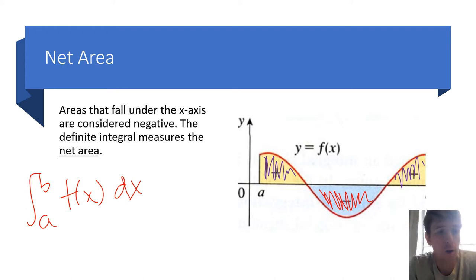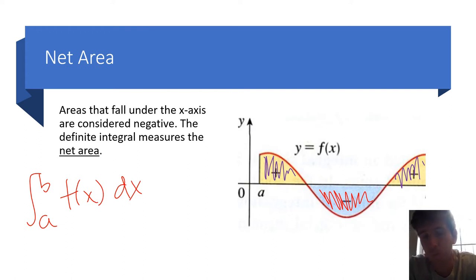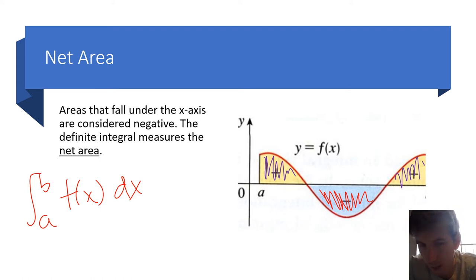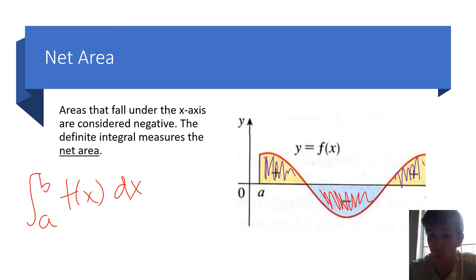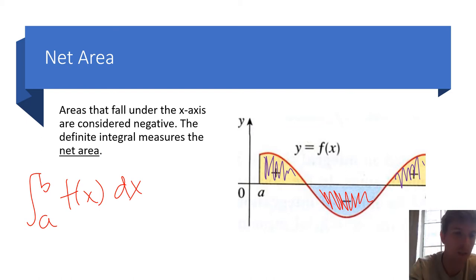We've mentioned how the definite integral gives us an area, and we've seen that sometimes it's given us negative numbers. You may have thought, how can an area be negative? The total area is not going to be negative. But the net area will be negative — that just means the majority of the function is below the x-axis. If the net area is positive, the majority or even the whole function is above the x-axis, at least in the interval from a to b.